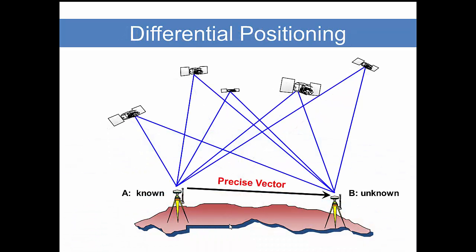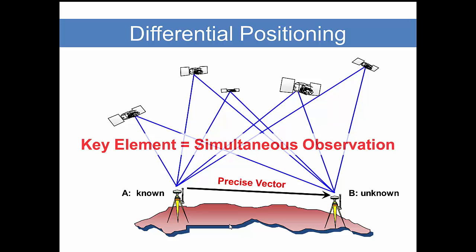In order to eliminate that error to a large extent, we use differential positioning. This requires simultaneous observation with two receivers.